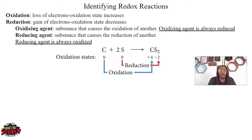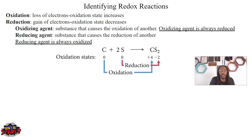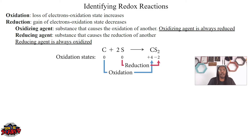Let's look at the oxidizing agent first. An oxidizing agent is a substance that causes the oxidation of another. So your oxidizing agent is causing the other reactant to be oxidized. A reducing agent is a substance that causes the reduction of another. So you always have your oxidizing agent and your reducing agent.